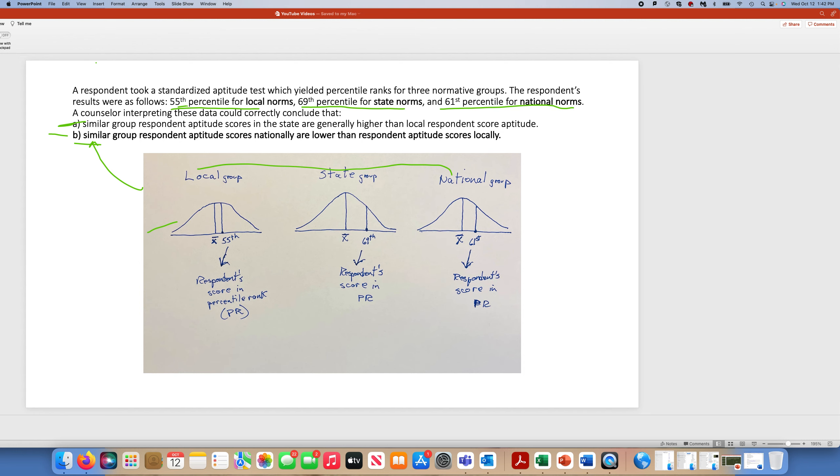This may be the local norm, maybe the actual school in which they are, and they're comparing this one student's scores with the sample scores of the actual school. The 69th percentile for the state, and then the 61st percentile for the national norms.